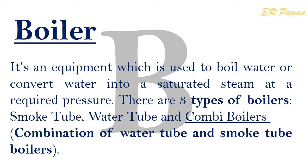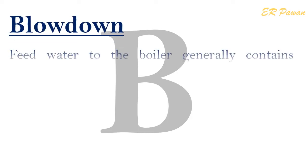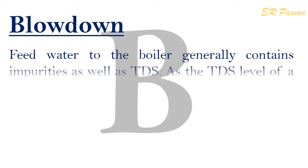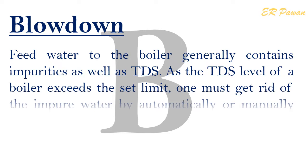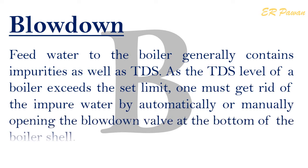Boiler: It is equipment which is used to boil water or convert water into saturated steam at required pressure. There are three types of boilers — smoke tube, water tube, and combi boilers (combination of water tube and smoke tube). Blow Down: Feed water to the boiler generally contains impurities as well as TDS. As the TDS level of a boiler exceeds the set limit, one must get rid of the impure water by automatically or manually opening the blow down valve at the bottom of the boiler shell.